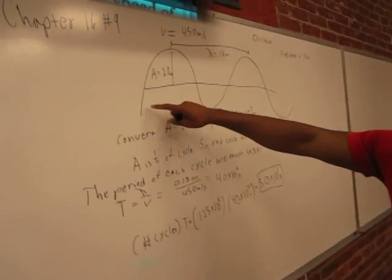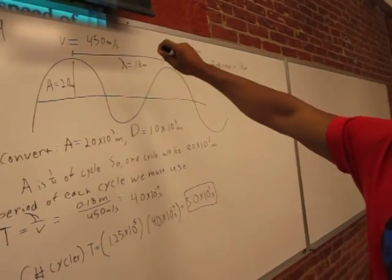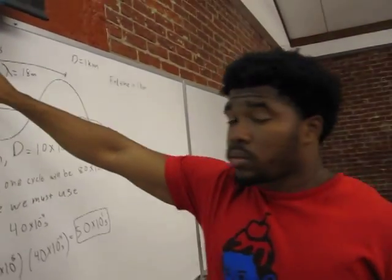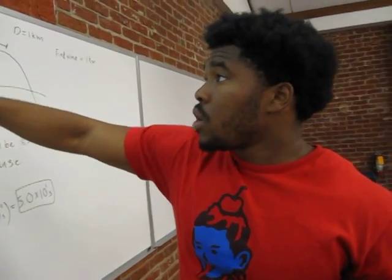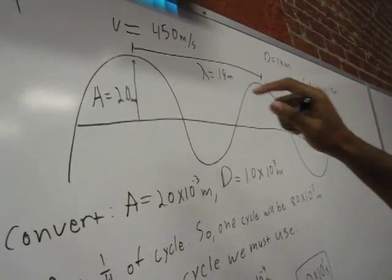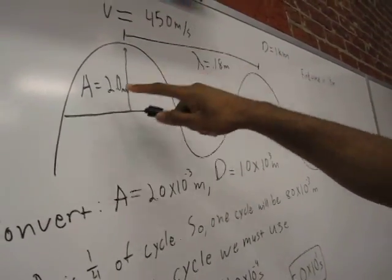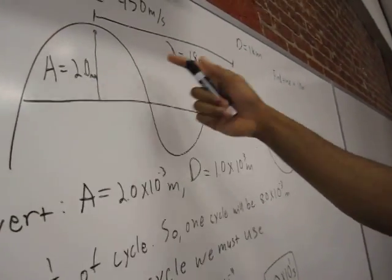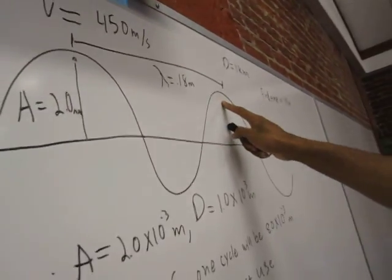Alright, so what I have here first is a drawing of what we are working on. We have our velocity of this wave at 450 meters per second. It's a string with a wave propagating through it, and you make that wave by yanking it. It creates an up-and-down transverse wave, as we see here, with amplitude of 2 millimeters. Then we have the wavelength, which is 0.18 meters from this crest to this crest.